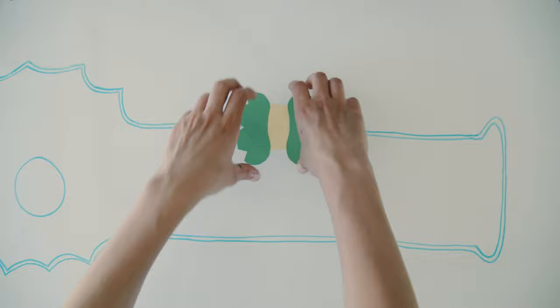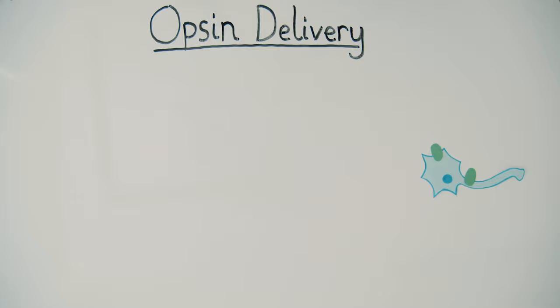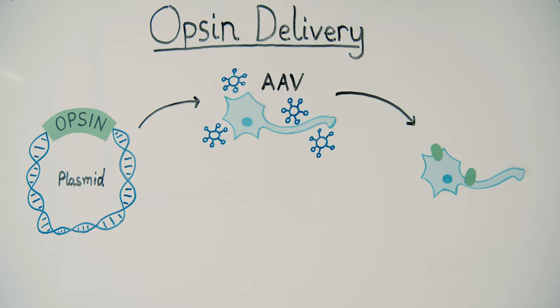Because opsins are not naturally found in neurons, they need to be genetically introduced to cells as DNA. This is commonly done through viral delivery with AAV or electroporation.